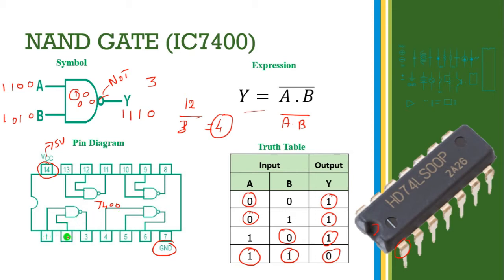In this IC, pins 1 and 2 are the inputs and pin 3 is the output of the 1st NAND gate. Pins 4 and 5 are the inputs and pin 6 is the output of the 2nd NAND gate. Pins 9 and 10 are the inputs and pin 8 is the output of the 3rd NAND gate. Pins 13 and 12 are the inputs and pin 11 is the output of the 4th NAND gate.